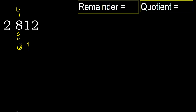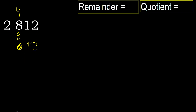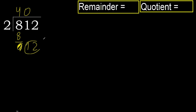Next, bring down 0 here. 1 is less than 2, therefore take the next 2 numbers. Complete with 0 — always complete with 0 because here we take 2 numbers: 12.